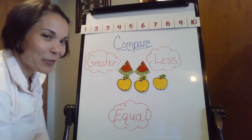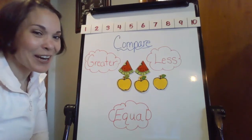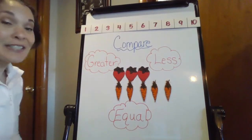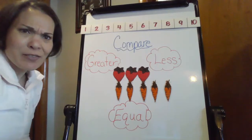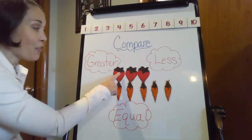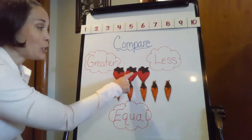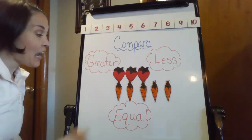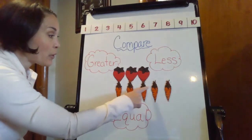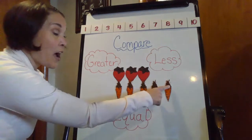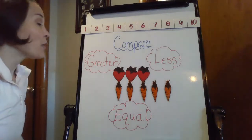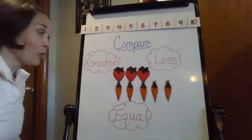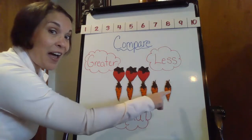Ready for another example? Here it comes. Okay, we're back. So as you can see, now I have some different pictures. I have one, two, three strawberries, and I have one, two, three, four, five carrots. So now I'm looking at three versus five.